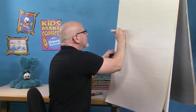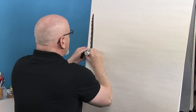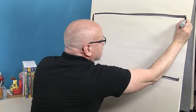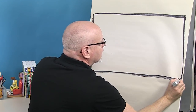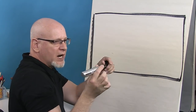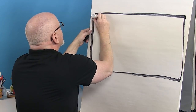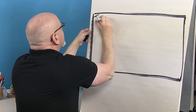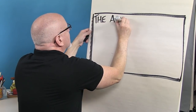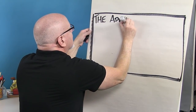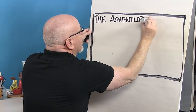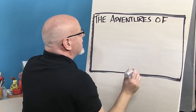So let's take a look here. I'll draw my title panel. And 'The Adventures of' — I'll probably just draw that out in normal size lettering. The Adventures of... now Dave.